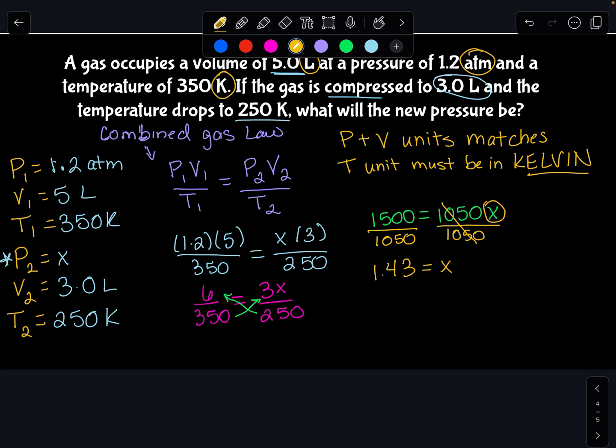Well, what is X? X is our P2. So what this is telling me is my P2 value is 1.43. My first pressure unit was an ATM, so my second pressure unit must be an ATM.